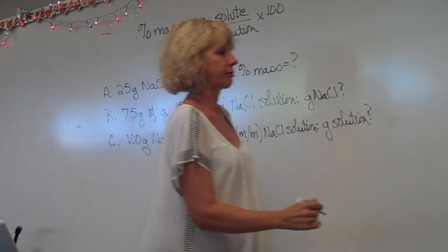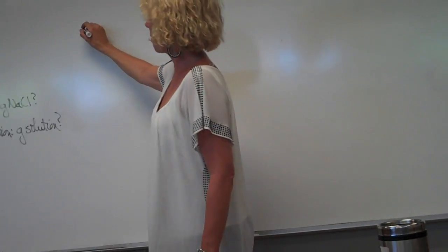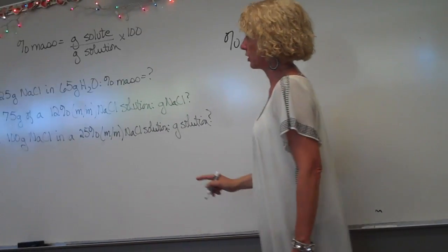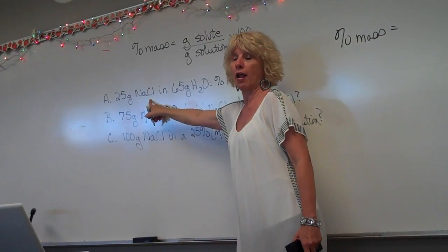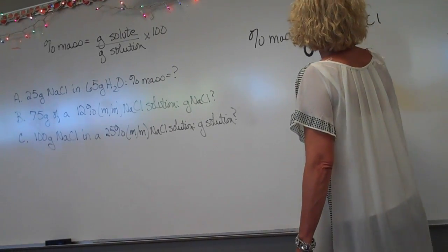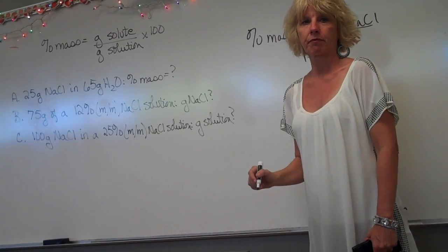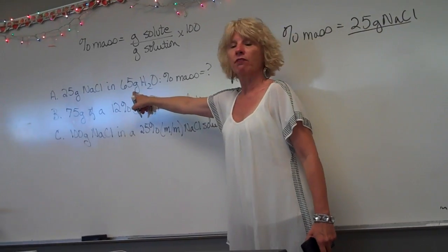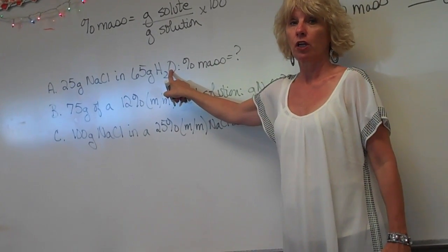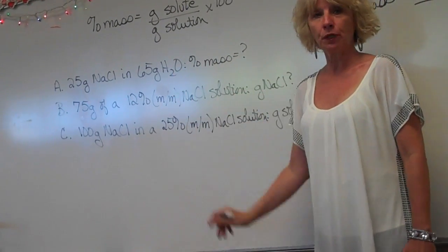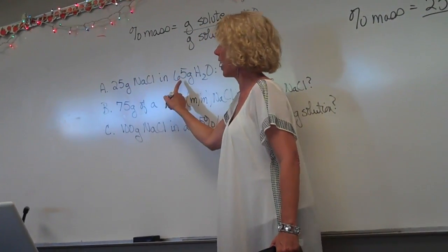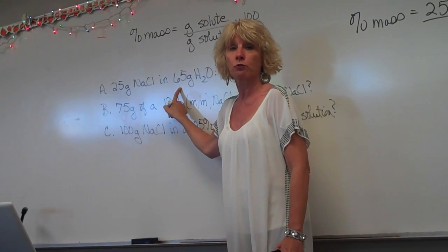Here's our formula. Percent by mass is equal to the grams of solute — 25 grams is the grams of solute — over the grams of solution. 65 grams of water is not the solution; that is the solvent. Solution equals solute plus solvent, so we need to add the 25 and the 65 together to get grams of solution.